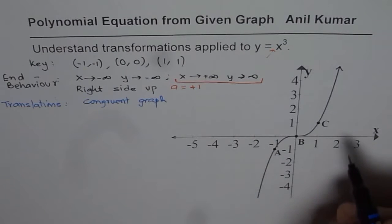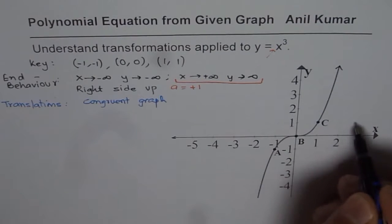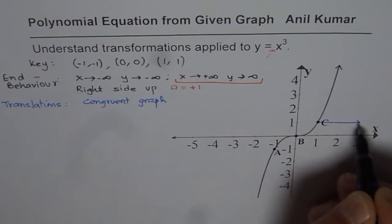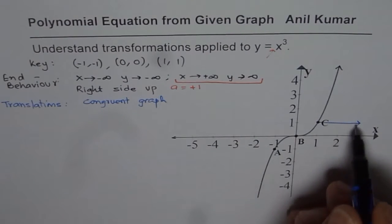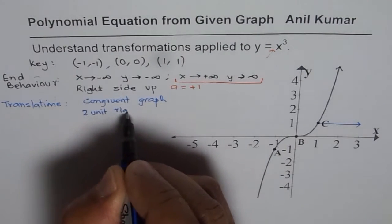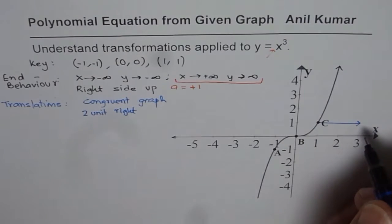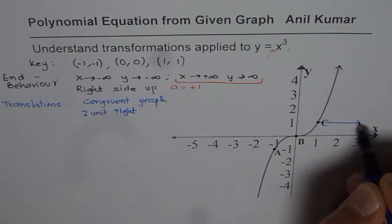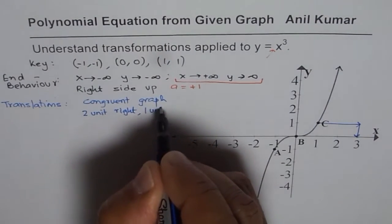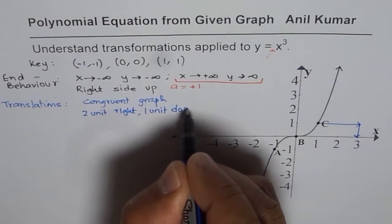If we translate this graph 2 units right and 1 unit down, each point moves in this fashion. So for example, we are translating 2 units right and 1 unit down.